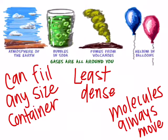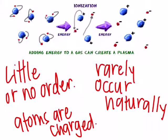Examples of gases are water vapor, carbon dioxide, helium, and nitrogen. Now let's talk about a state of matter you might not have heard of called a plasma. Plasmas rarely occur naturally because they're pretty tricky to make. What happens is that energy is added to a gas which causes the atoms to come apart so that they're ions, which are charged atoms.